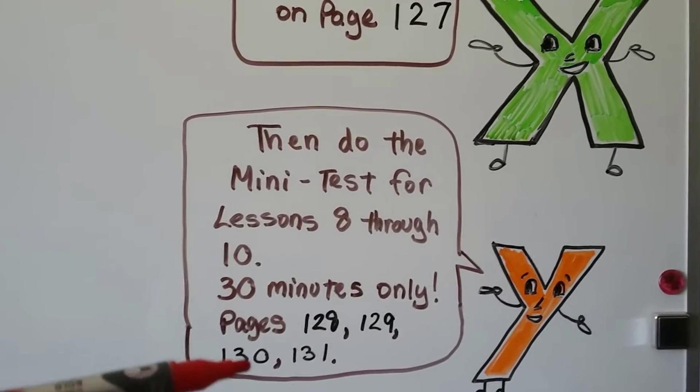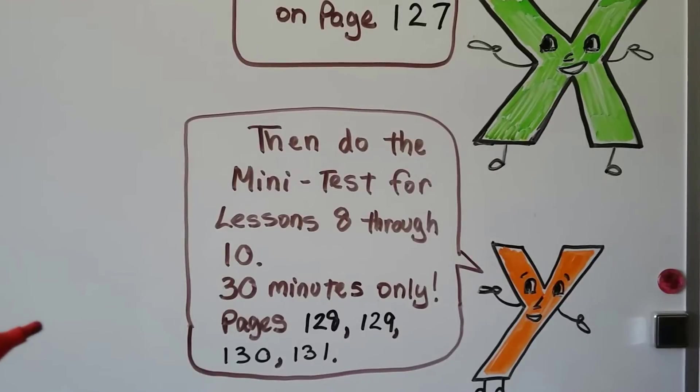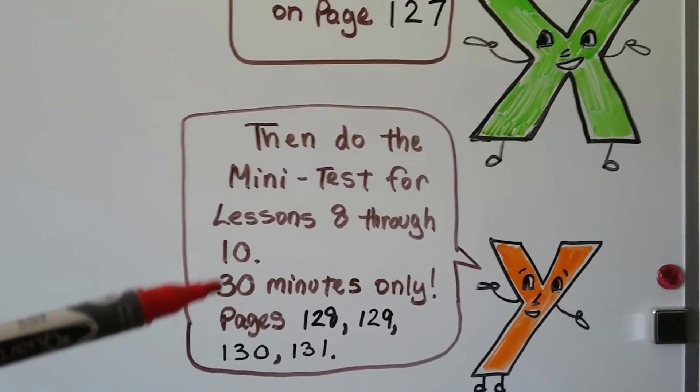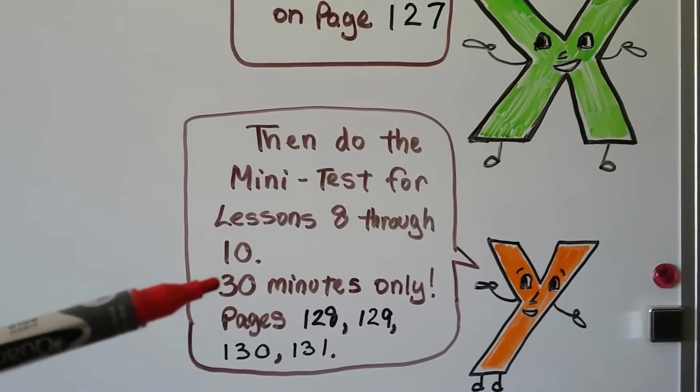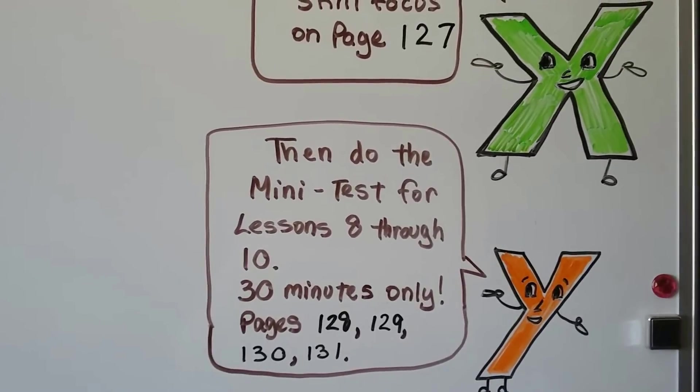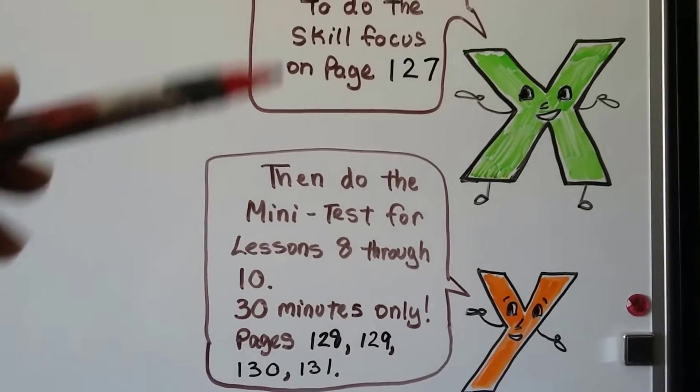If you don't do it, you might be taking the actual test and say, why is this time so short? This is helping you figure out how much you can get done in 30 minutes. And that's pages 128, 129, 130, 131.